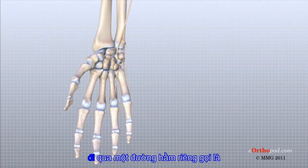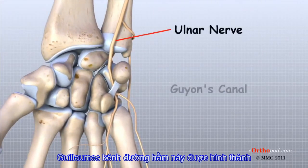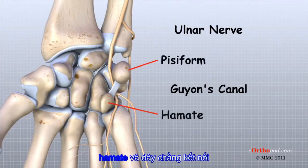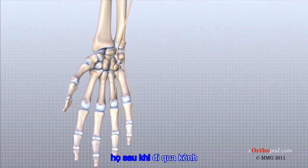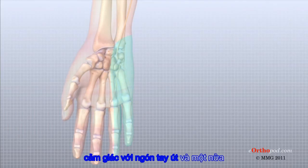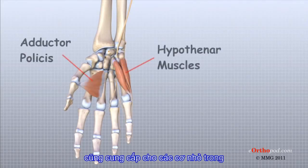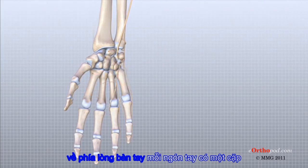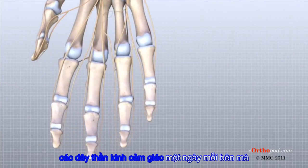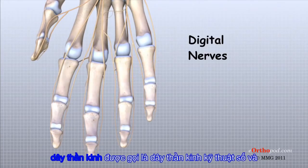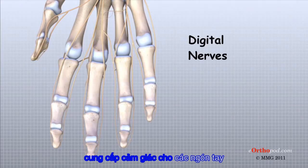The ulnar nerve travels through a separate tunnel called Guyon's Canal. This tunnel is formed by two carpal bones, the pisiform and hamate, and the ligament that connects them. After passing through the canal, the ulnar nerve branches out to supply feeling to the little finger and half the ring finger. Branches of this nerve also supply the small muscles in the palm and the muscle that pulls the thumb toward the palm. Each finger has a pair of sensory nerves, one on each side, that runs to the tip of the finger. These nerves are called the digital nerves and supply sensation to the fingers.